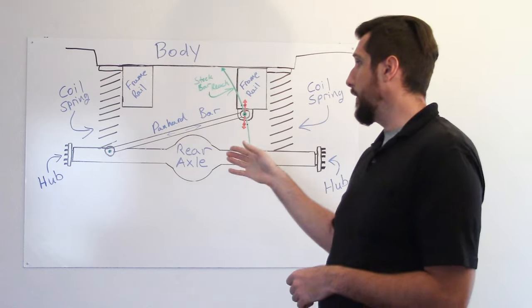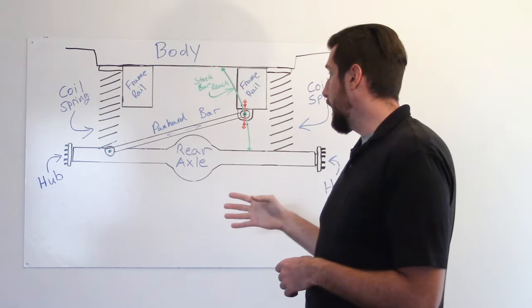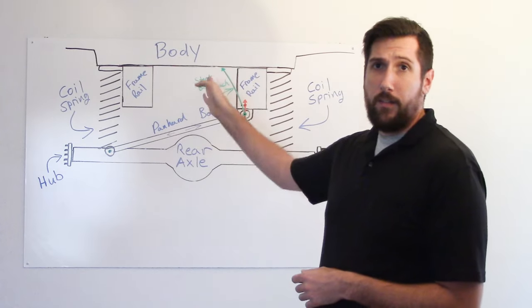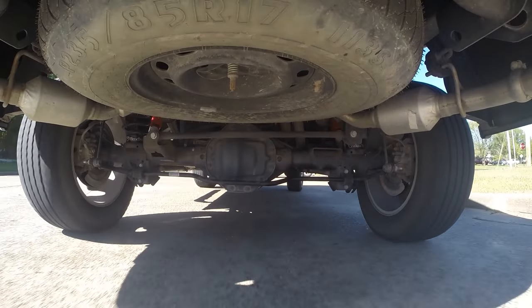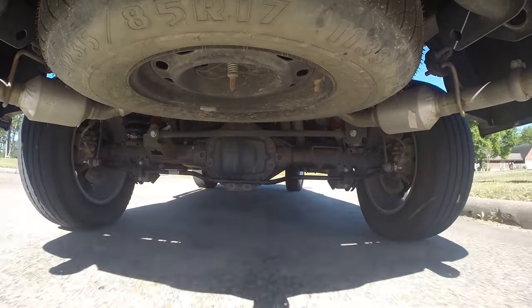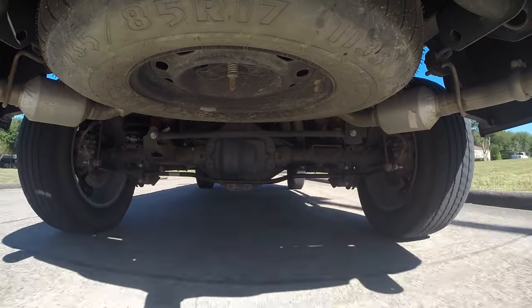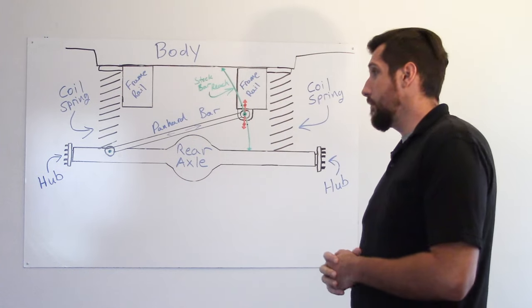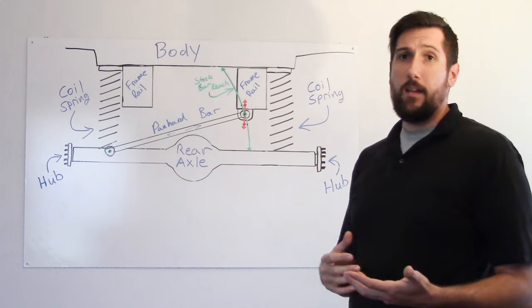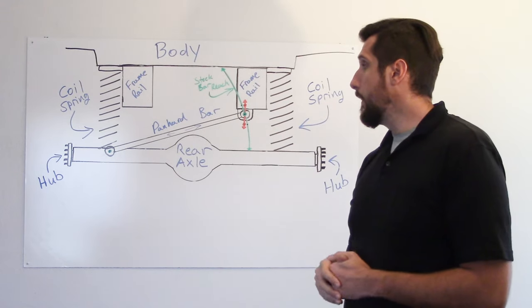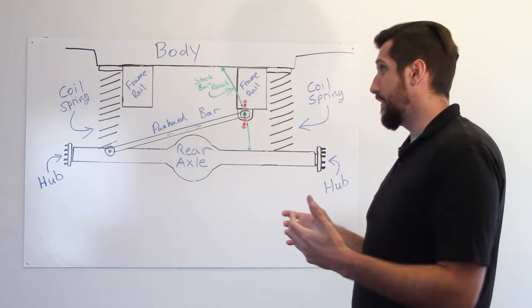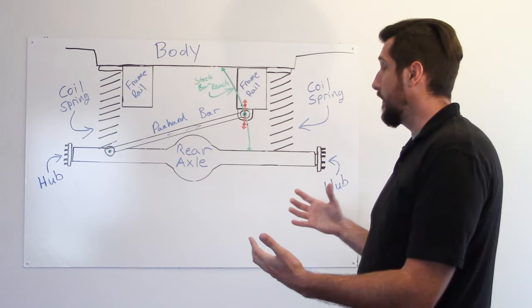So by tying the frame and the rear axle together with that panhard bar, it keeps everything aligned on the center line and it makes everything stable, more safe, and honestly doable. The reason that you need to change your panhard bar if you're changing the ride height of this kind of suspension setup just has to do with the geometry of how everything fits together.